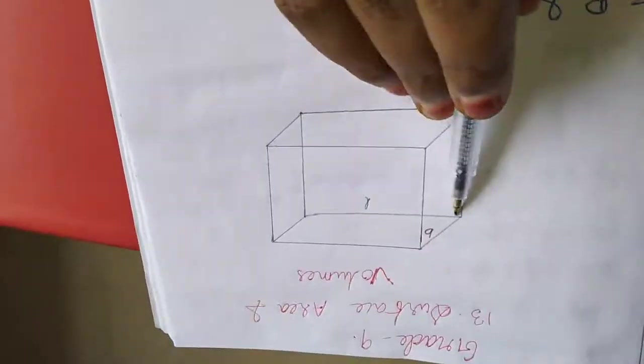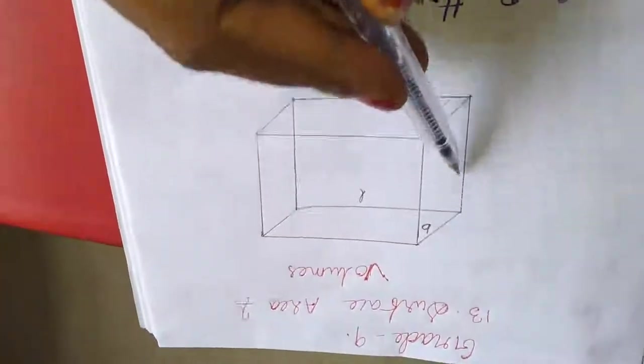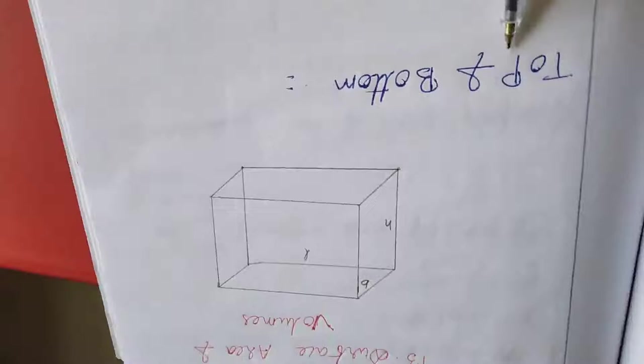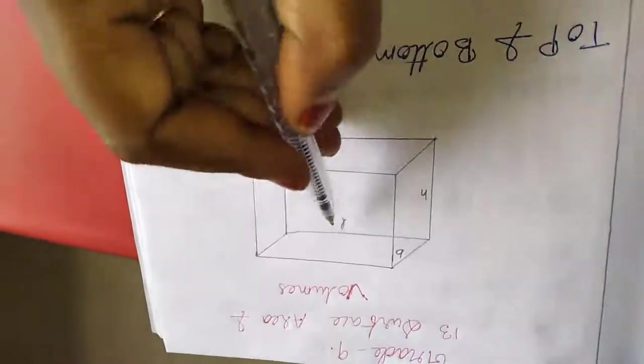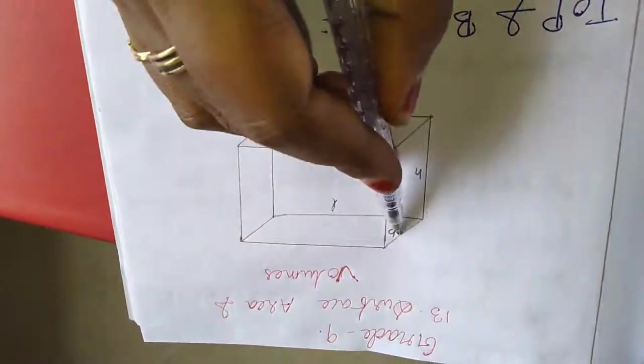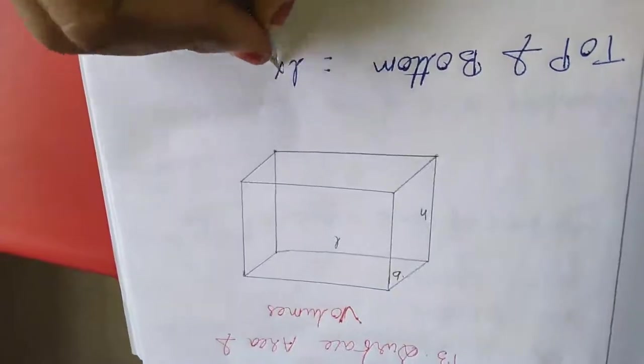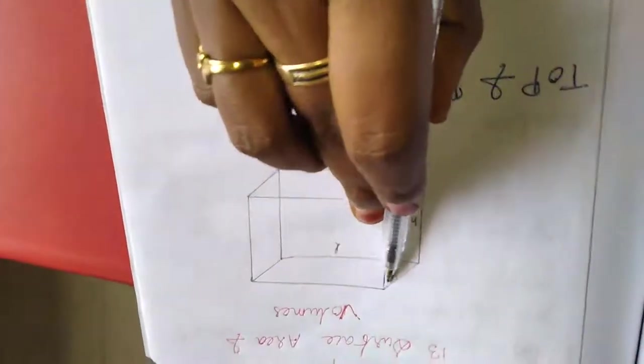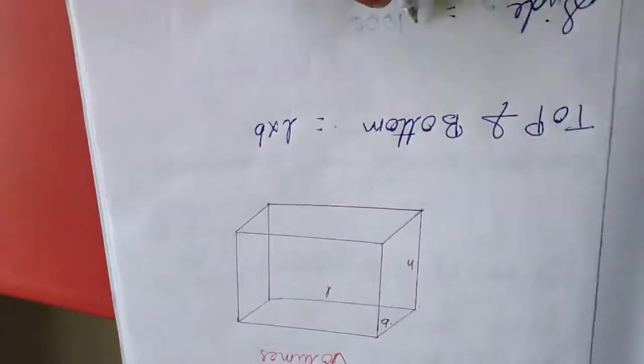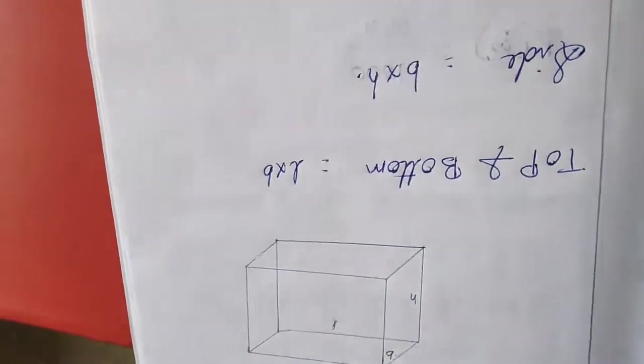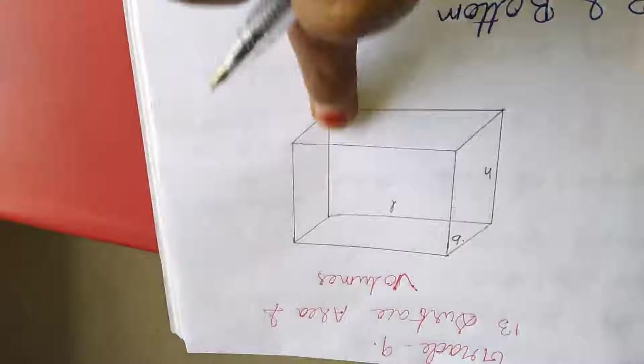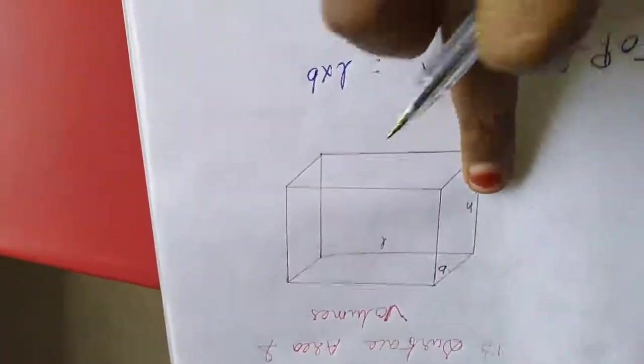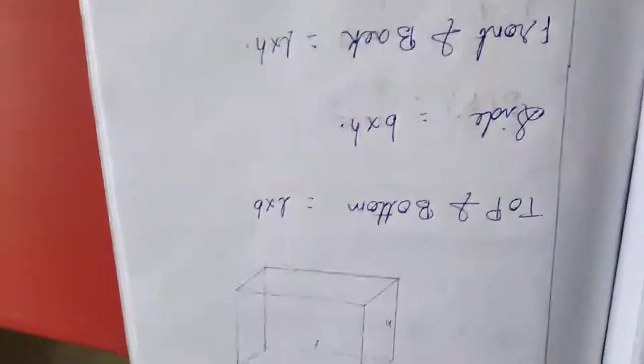See here, this is a cuboid. This is length, this one is breadth, this is height. Top and bottom area comes from length into breadth. Side means breadth into height. Front and back means length into height.